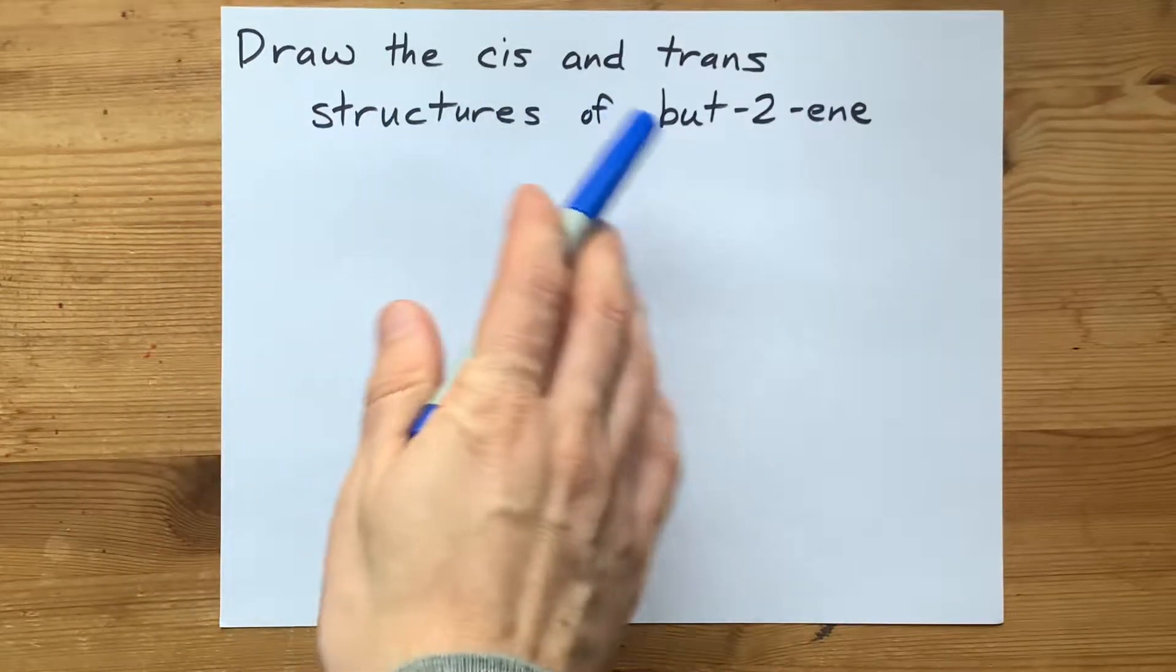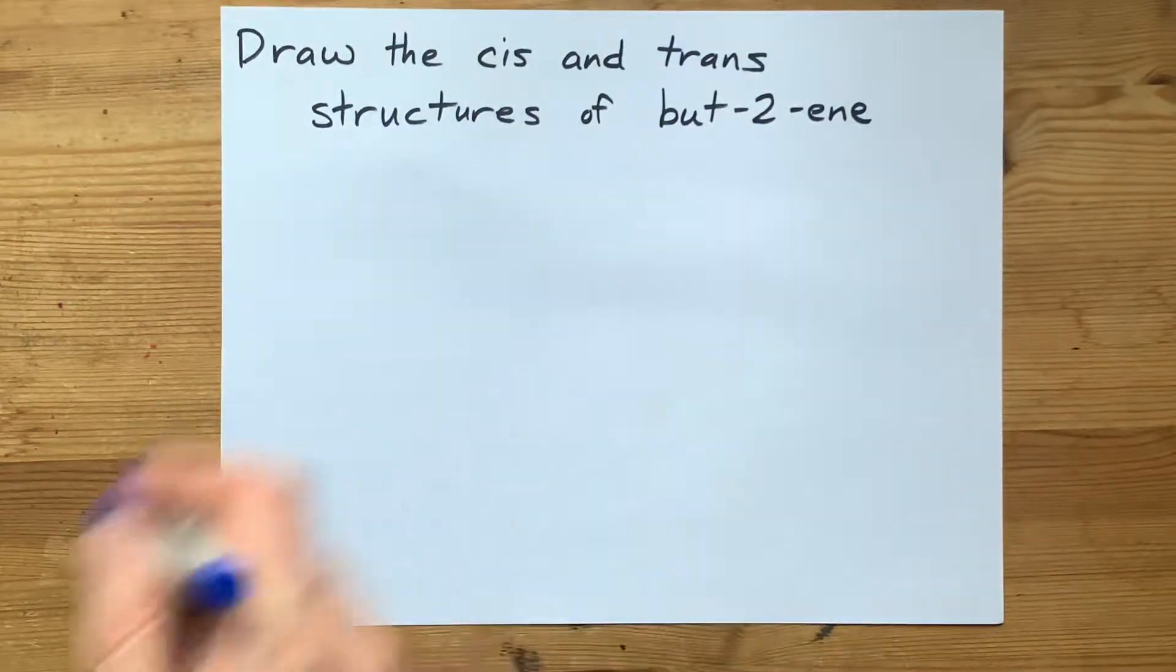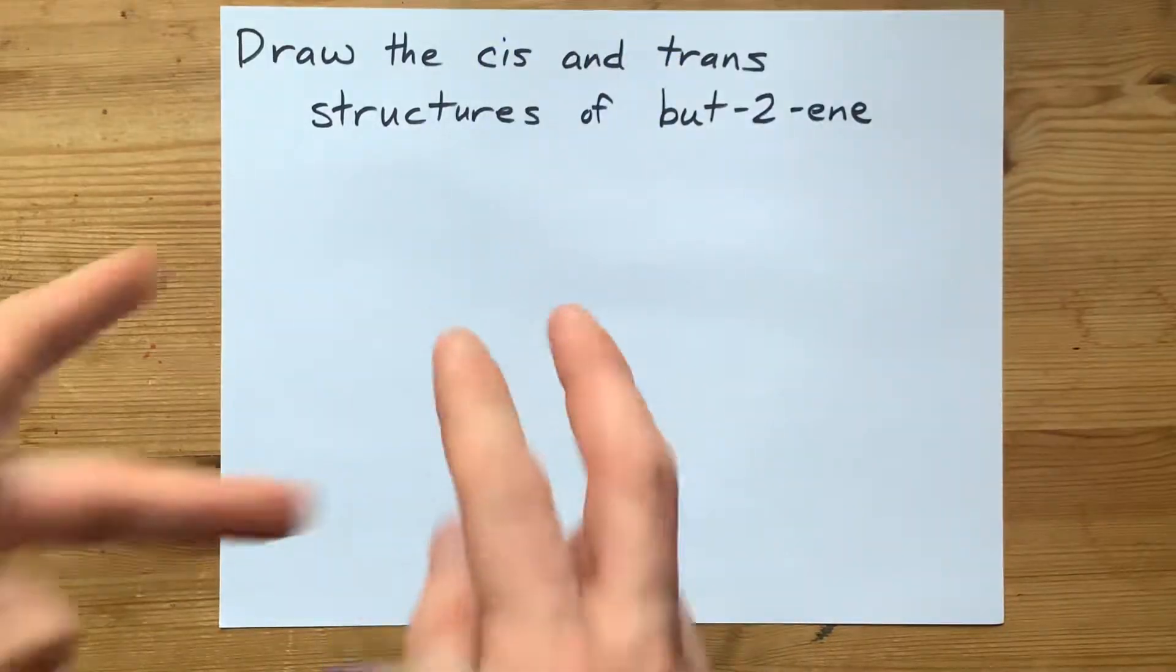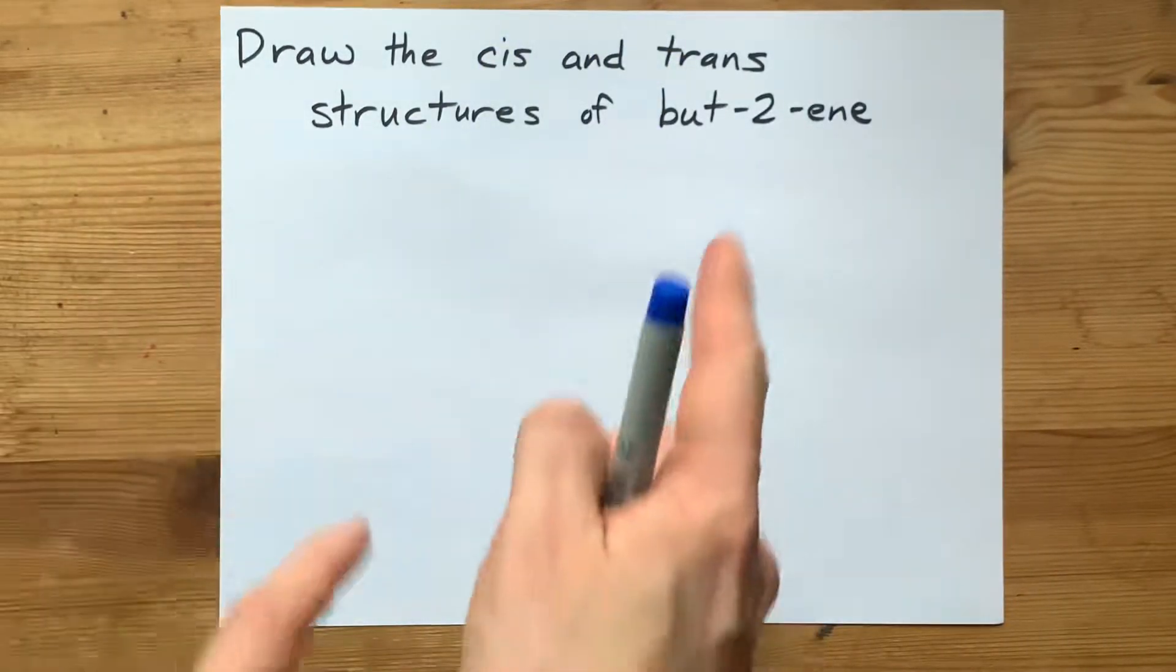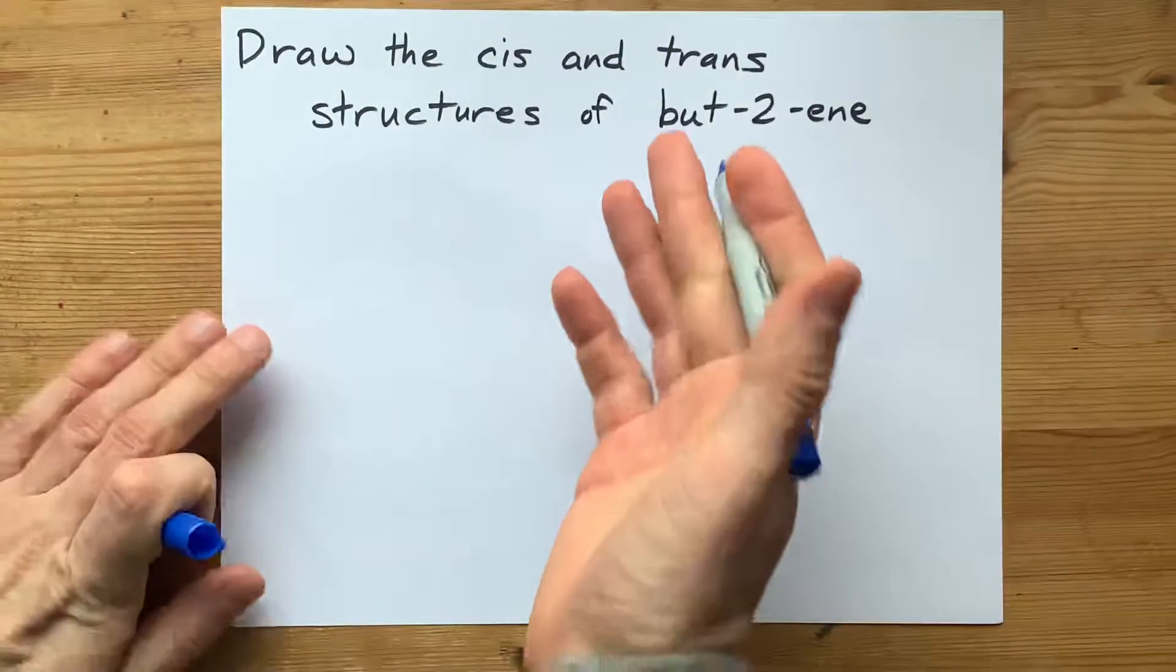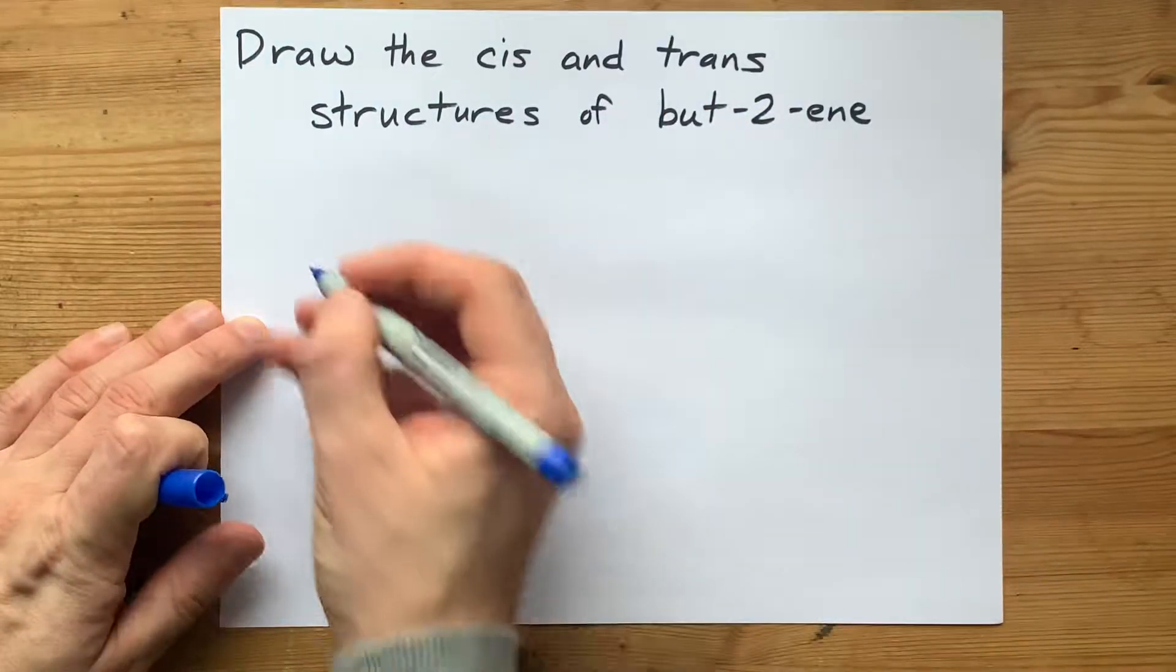We are going to draw the cis and trans structures for but-2-ene. Cis and trans is about the way things are oriented around the rigid double bond. So let's draw the molecule and see what those things are.